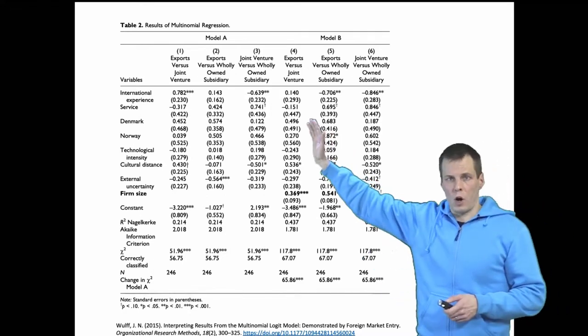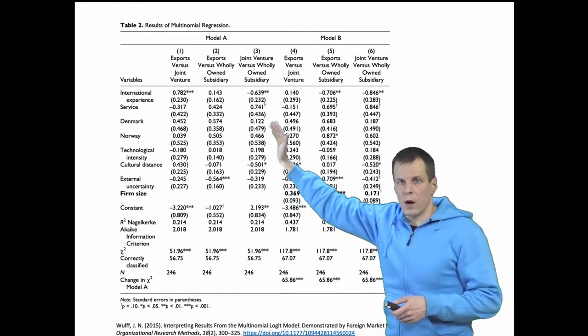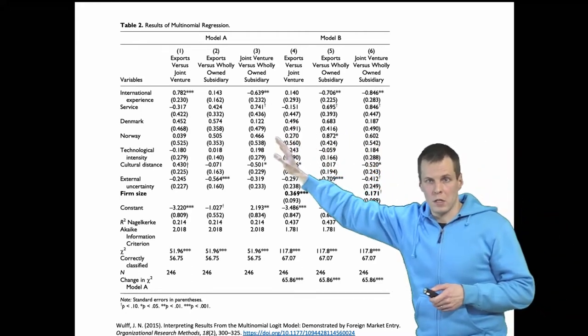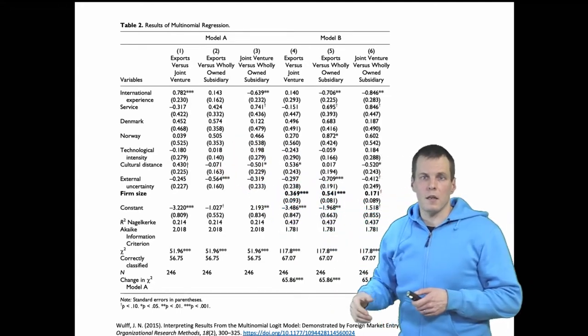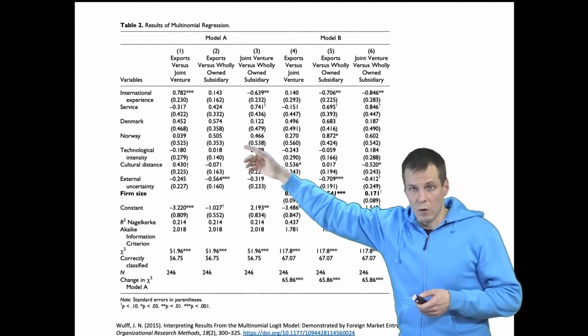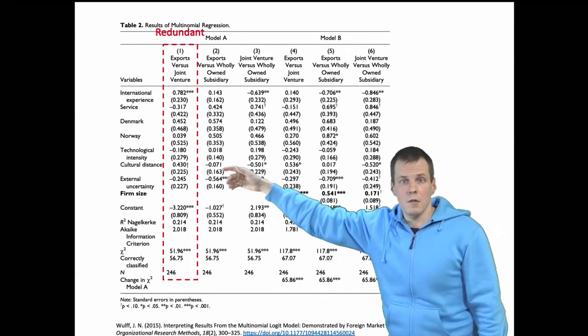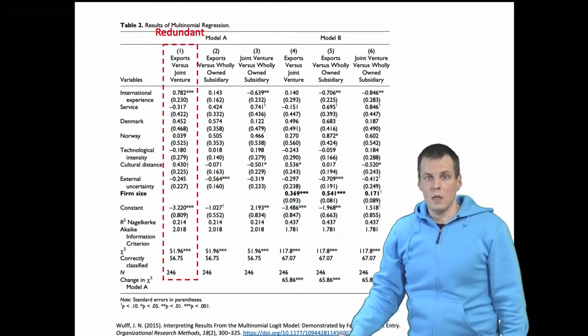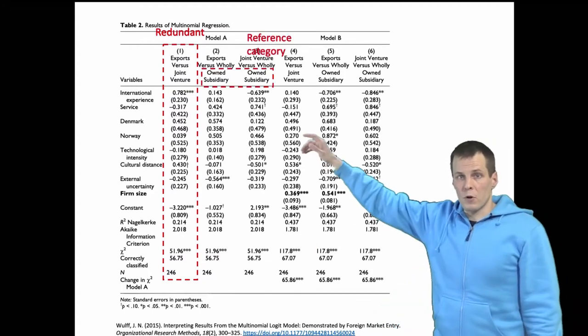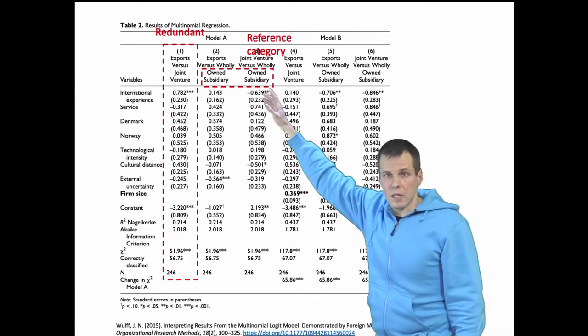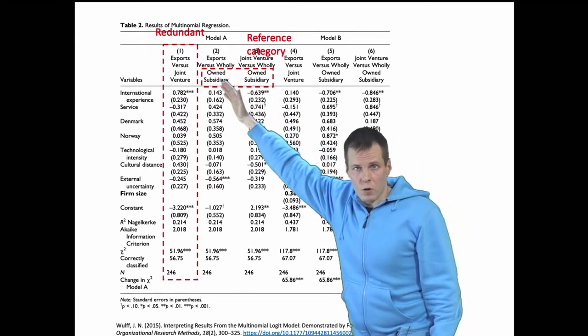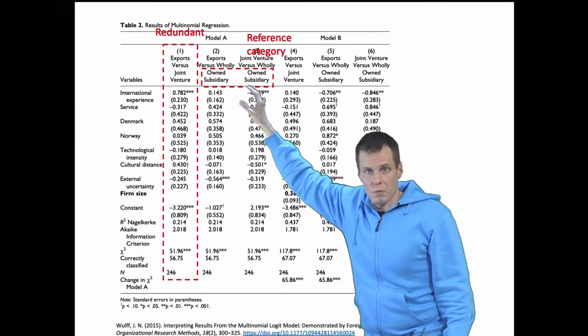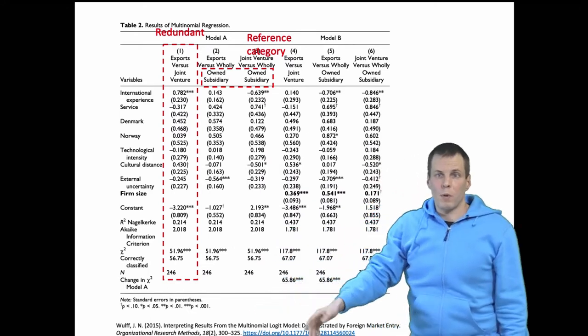They have two models. Model A has three equations, Model B has three equations. They have three options for the categorical variable and three equations. The reason there are three equations is that it's easier to present the results if you have all three possible comparisons here. This is redundant - it's not actually needed for estimating the model, but you can calculate the third model for the third odds afterwards. The reference category here is wholly owned subsidiary. They're estimating two logistic regression models, and these coefficients give the probability of the different alternatives.